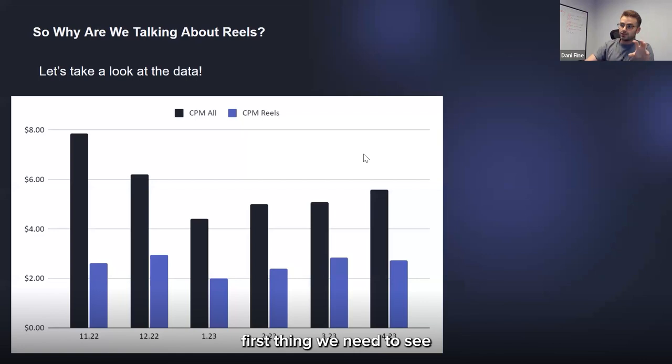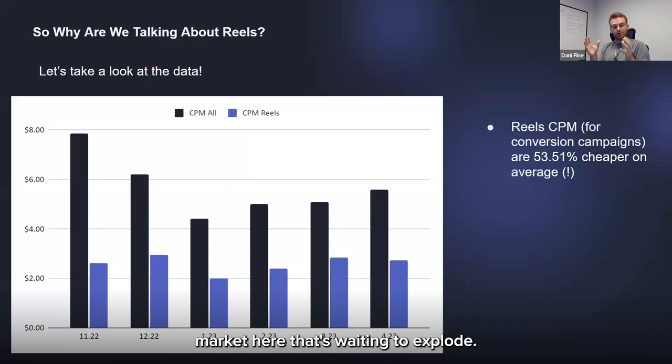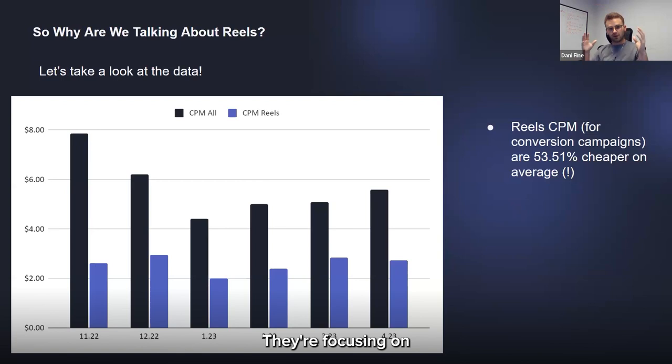Now let's look at the data. First thing to see: it's still very uncompetitive. For conversion campaigns, CPMs for Reels are 53% cheaper on average than the rest of the placements. There's still a massive market waiting to explode. The reason it hasn't exploded yet is because most people don't know how to generate content that works for Reels — there's a different language to speak in Reels versus Facebook Feed. That's what people are still missing. The big brands making tons of money from e-com are now focusing on these types of content.